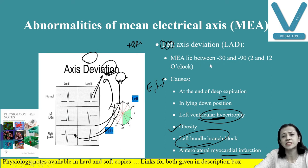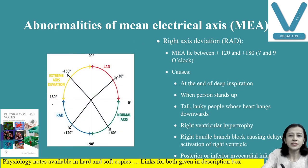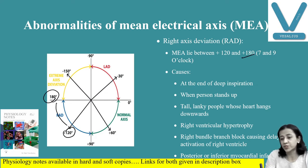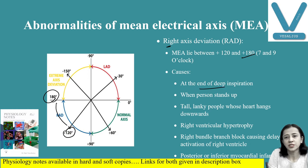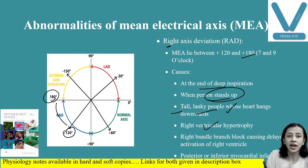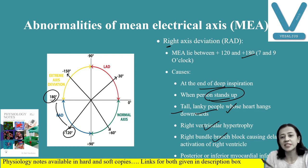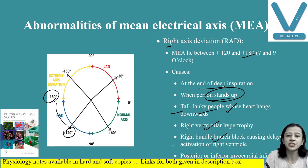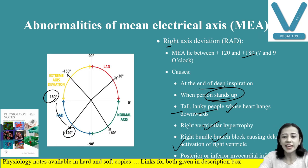Right axis deviation occurs when the mean electrical axis lies between plus 120 to plus 180 degrees. The causes are the opposite of left axis deviation: deep inspiration, standing up position, tall and lanky people whose heart hangs downward, right ventricular hypertrophy due to pulmonary disease, right bundle branch block causing delayed activation of the right ventricle and the arrow moving from left to right, and posterior and inferior wall myocardial infarction.